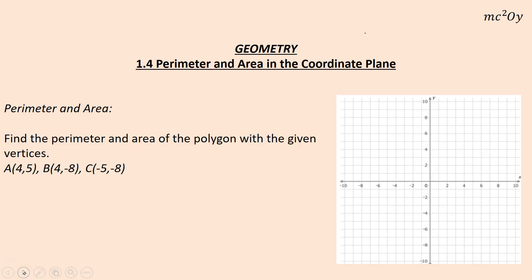Now we'll be able to find area and perimeter within the coordinate plane. If I plot three points A at (4,5), B at (4,-8), and C at (-5,-8), we have this shape which happens to be a triangle. If you have a hard time drawing lines to connect points, just use dots.